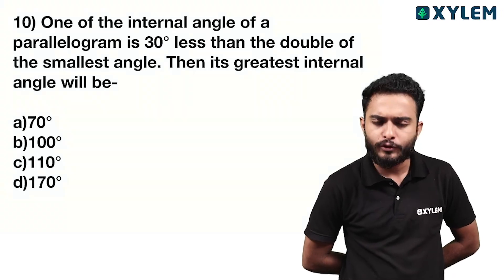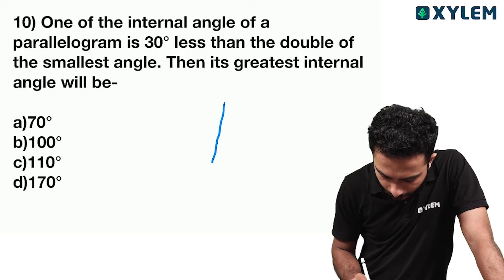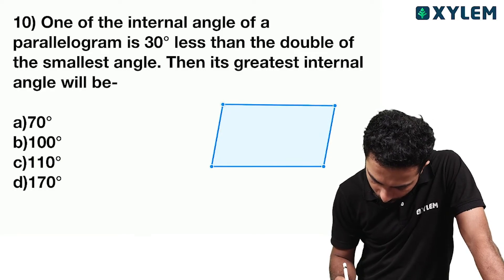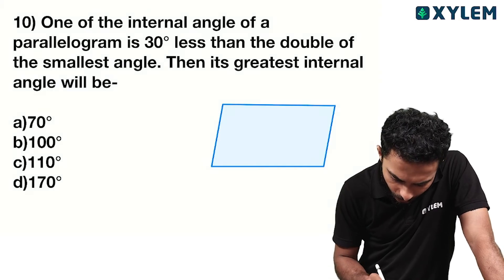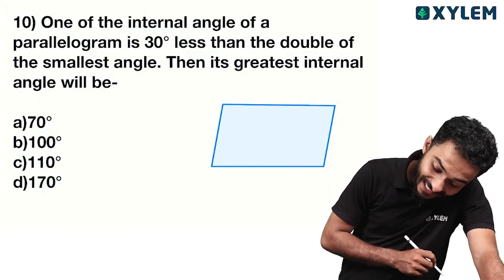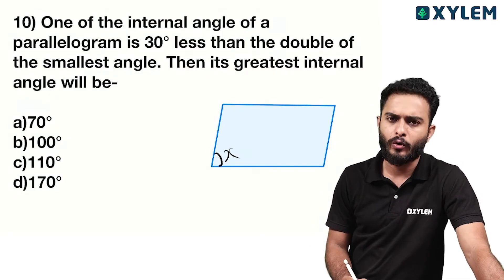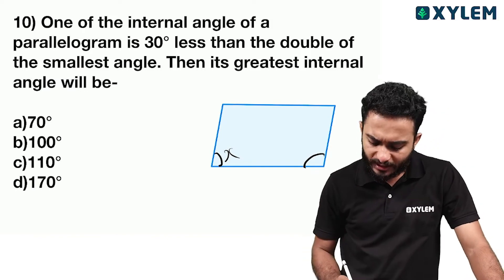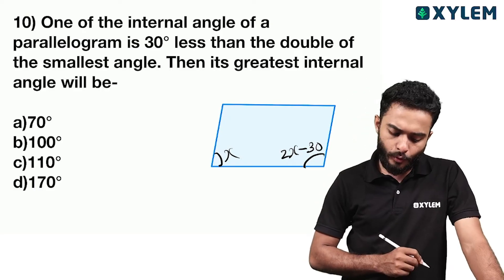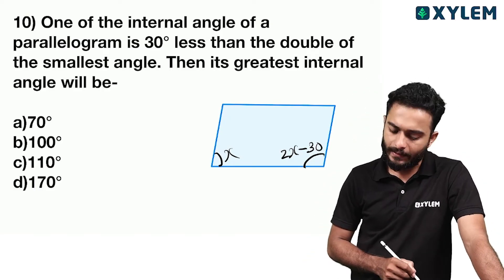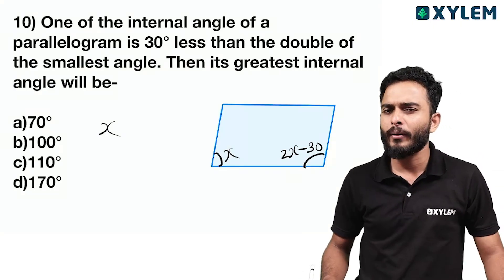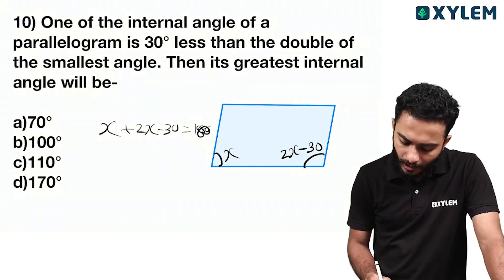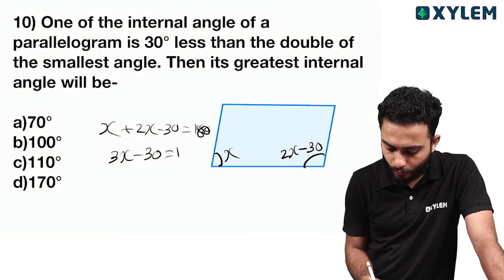One of the internal angles of a parallelogram is 30 degrees less than double the smallest angle. Let the smallest angle be x. Then double the smallest angle is 2x, and the greatest angle is 2x minus 30. Adjacent angles are supplementary: x plus 2x minus 30 is equal to 180. So 3x minus 30 equals 180.